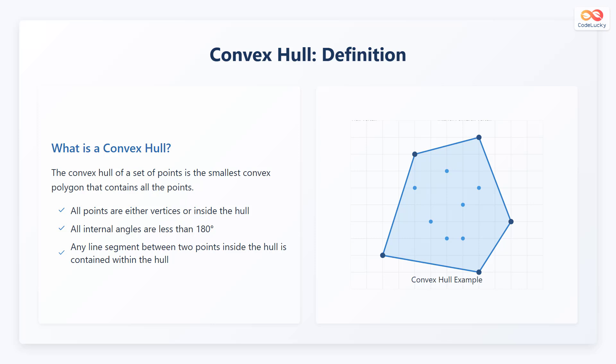First, all points are either vertices, which means corners, or inside the hull. Second, all internal angles are less than 180 degrees. Third, any line segment between two points inside the hull is contained within the hull. This means that if you take any two points within the shape and draw a line between them, that line will also be inside the shape.